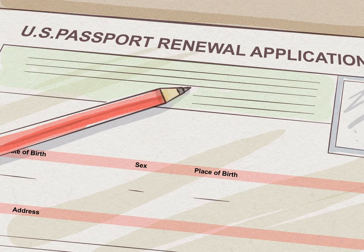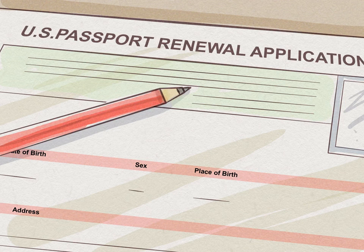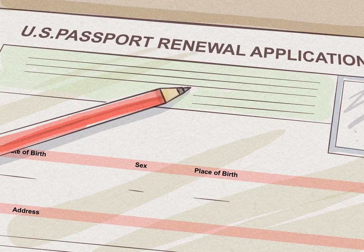Renew your passport if necessary. Your passport must be valid for six months past the date you intend to stay in the US. For example, if your visit ends June 12, then your passport should be valid until at least December 12. There are many exceptions depending on your country. You can see a list of countries exempted from this requirement on the Customs and Border Patrol website.